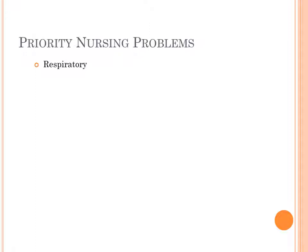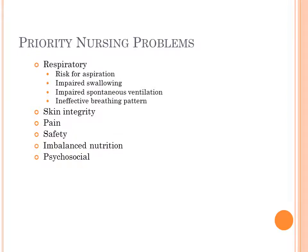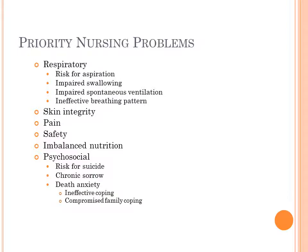Priority nursing problems with ALS: preserving respiratory function and protecting and supporting respiratory effort. Along with that, risk for aspiration and impaired swallowing. Skin integrity is a concern as patients lose muscle tone and become bed-bound. Pain management is important. Safety, imbalanced nutrition — involving dieticians. Psychosocial concerns include the depressive component, risk for suicide — especially early on as patients realize the course of their disease — chronic sorrow for both the patient and caregivers, and death anxiety. Impaired verbal communication, especially in later stages, can be addressed with adaptive devices and technology from speech pathology.